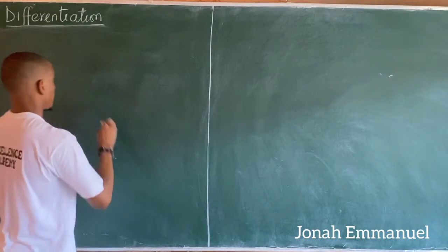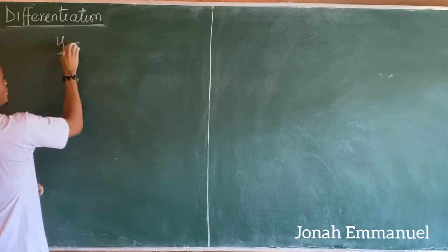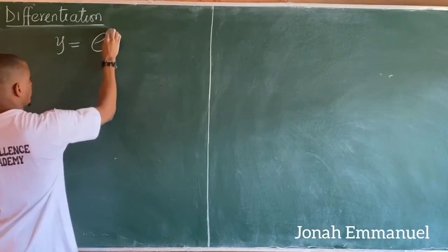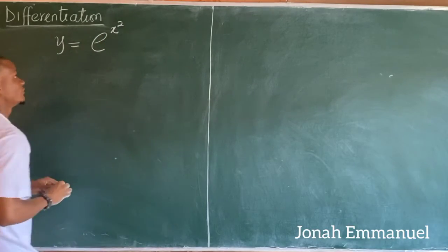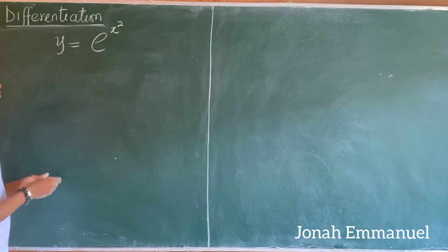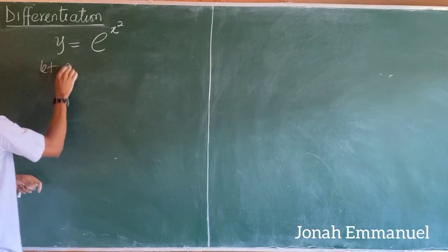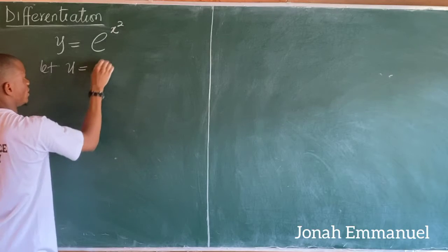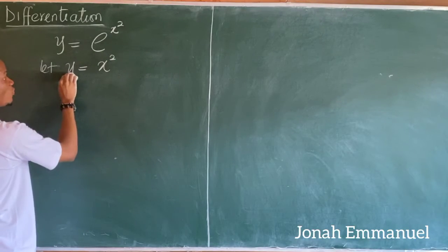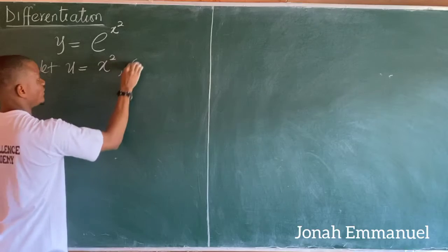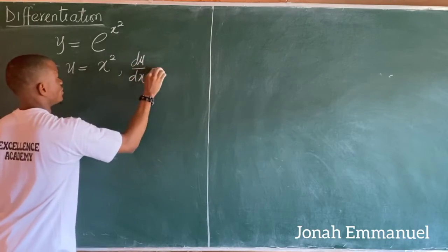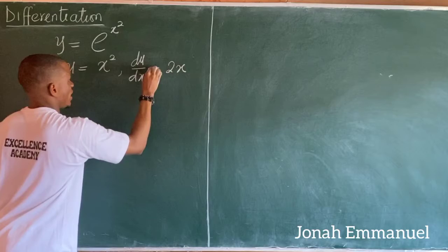If I have that y is equal to exponential of x squared, I'm asked to differentiate this. What do you do? We say, let u be equal to x squared. Differentiating u with respect to x, I'll have that du over dx is equal to 2x.